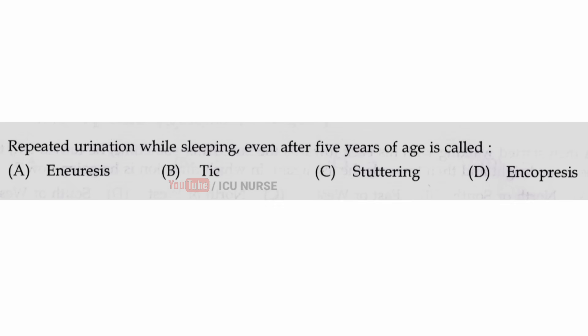Repeated urination while sleeping even after 5 years of age is called — the correct answer is A — enuresis.